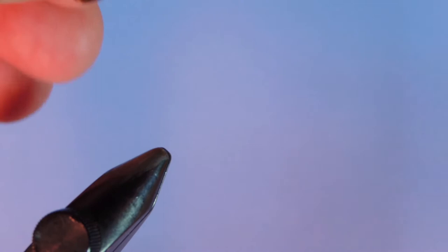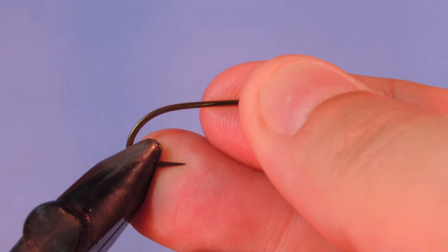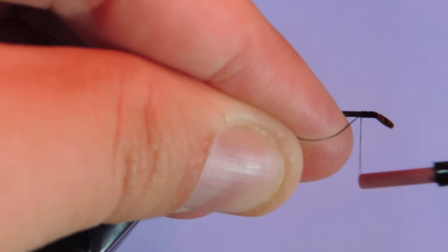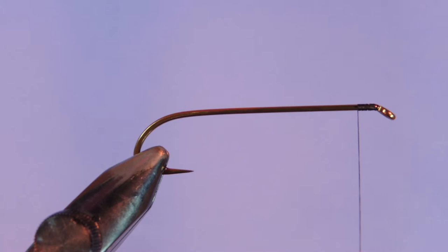Let's get a new hook in the vise. We're using a Mustad Signature L87-36658. This is a size 4. I'll just start by putting a few turns of a black 6-0 thread. Trim that out.